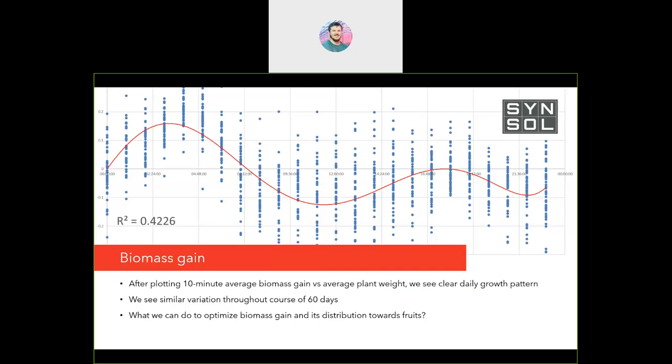Looking not only at 24-hour periods but also within the day period: this graph represents a 24-hour period divided into 10-minute slots — actually about 10 per hour. There you see a daily sinusoidal pattern of growth: in the morning the growth is more rapid; during the day when the sun is out it is much slower.